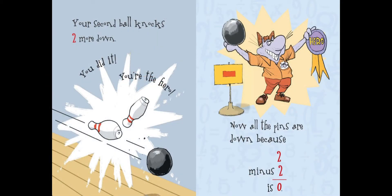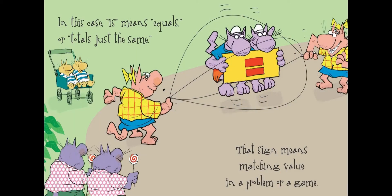Your second ball knocks two more down. You did it! You're the hero! Now all the pins are down because 2 minus 2 is 0. In this case, is means equals, or totals just the same. That sign means matching value in a problem or a game.